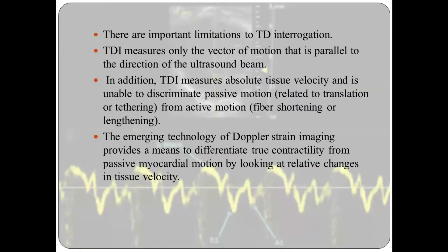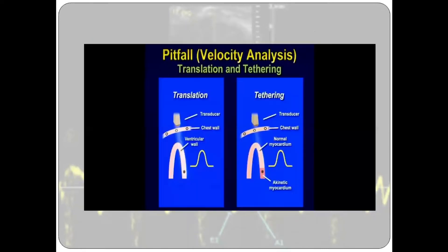There are some important limitations to tissue Doppler interrogation. It measures only the vector of motion that is parallel to the direction of the ultrasound beam, so it is very important to keep the vector parallel. In addition, tissue Doppler imaging measures absolute velocity and is unable to discriminate passive motion from active motion — passive motion being related to translation or tethering, or any motion from outside the chest cavity or from surrounding normal myocardium. The emerging technology of Doppler strain imaging will help differentiate true contractility from passive myocardial motion by looking at relative changes in tissue velocity. Translation and tethering movement can affect tissue Doppler imaging.